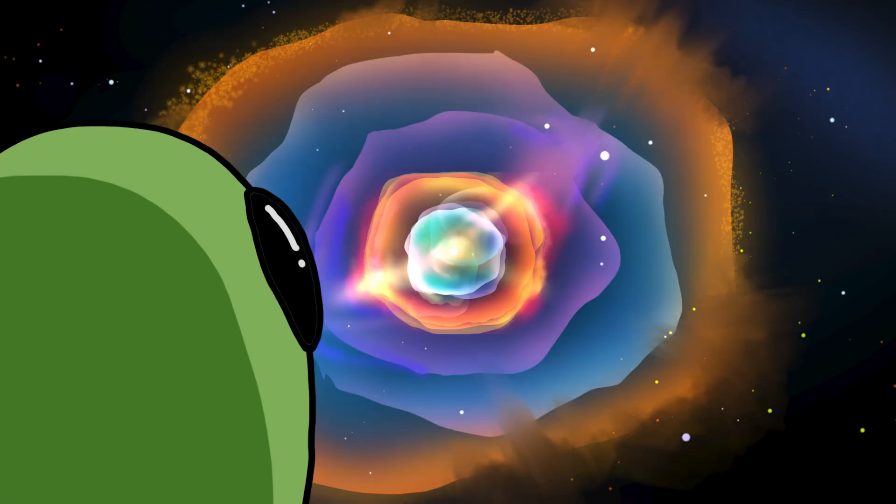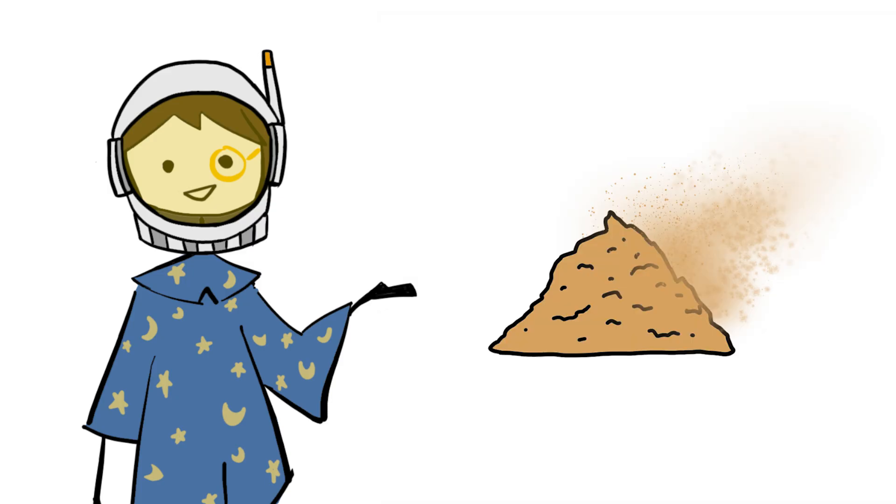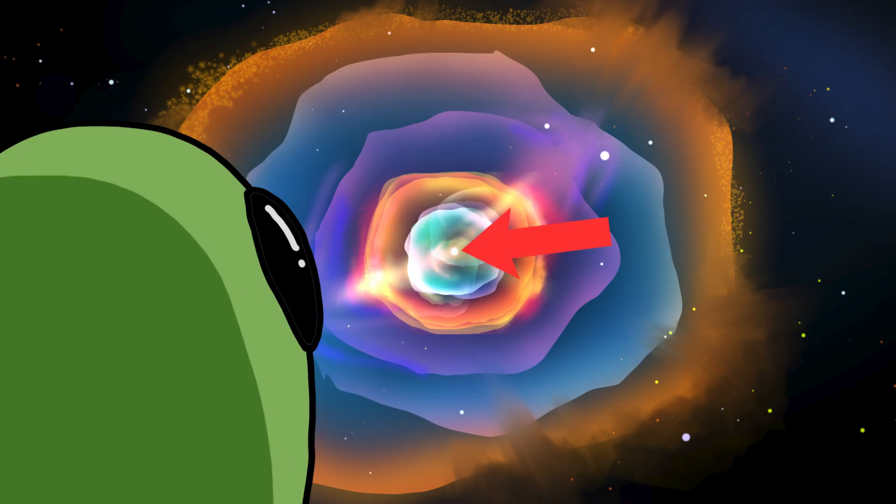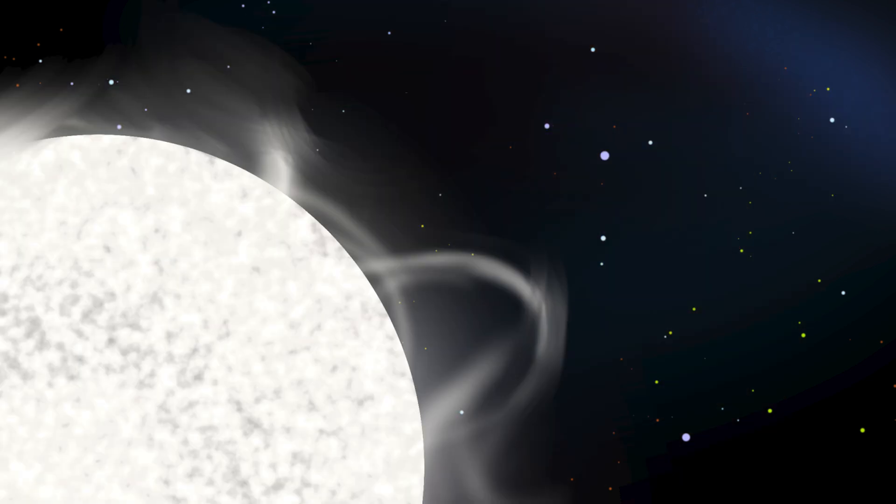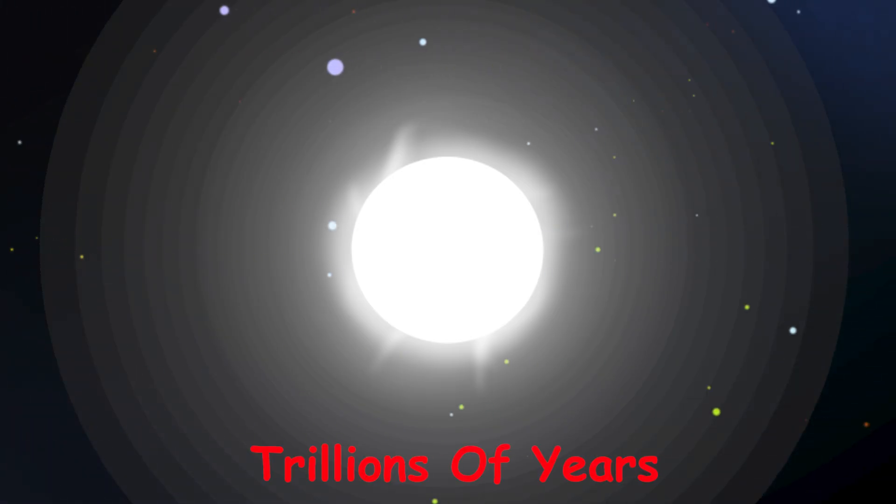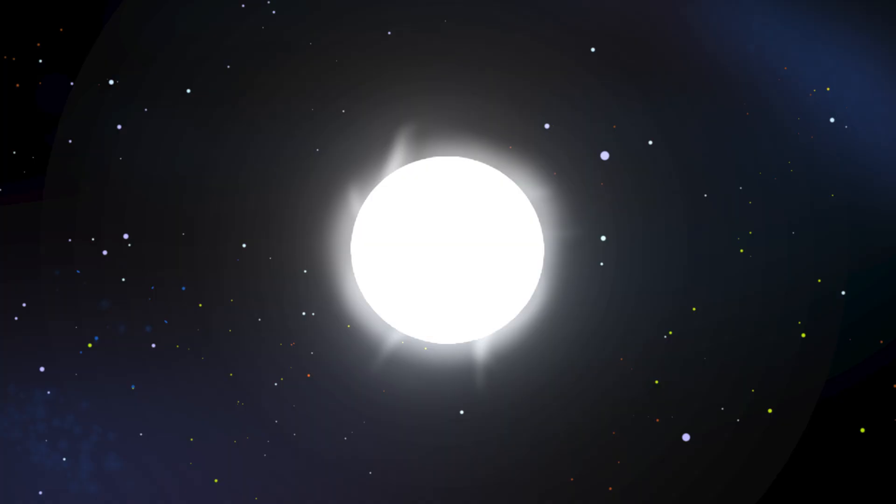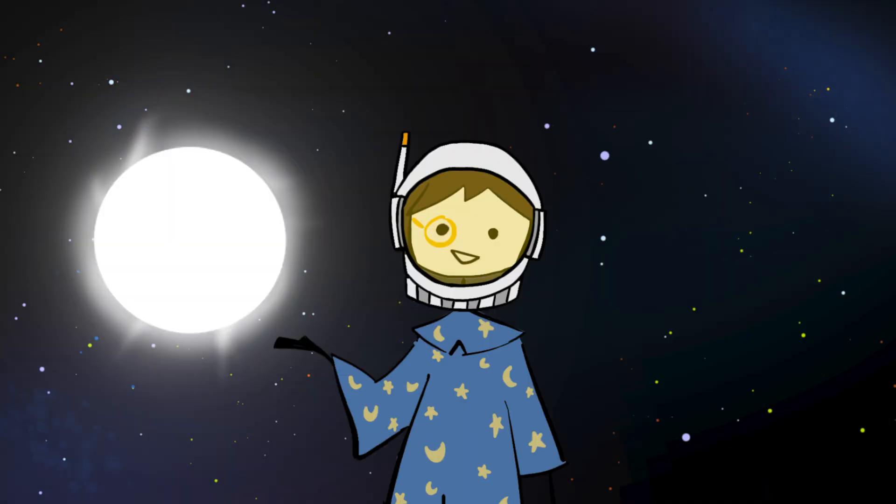The planetary nebula serves as the final artistic flourish of a dying star. Observers from distant star systems would see an intricate structure: rings, jets, and lobes carved by magnetic fields in previous mass ejections. The colors are vivid. Red from hydrogen, green from oxygen, blue from ionized helium. At the center of the nebula sits a tiny, intensely hot object, the white dwarf remnant of the Sun. Immediately following the ejection of the planetary nebula, the core of the Sun is revealed. A white dwarf with about half the Sun's original mass, compressed into a sphere the size of Earth.